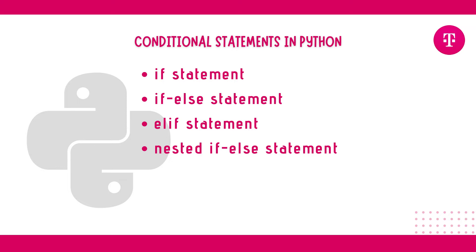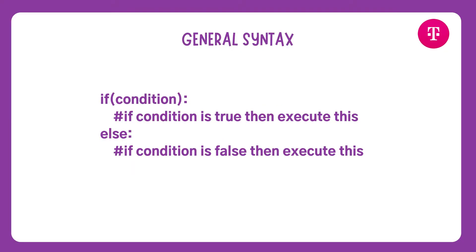Let's start with if-else in Python and look at its syntax. First, we give the keyword 'if', then the condition — for example, if we want to check age, the condition would be 'age greater than 18'. After the condition, a colon is placed, then on the next line with some indentation we write the piece of code to be executed if the condition is true. After this, 'else' appears with a colon.